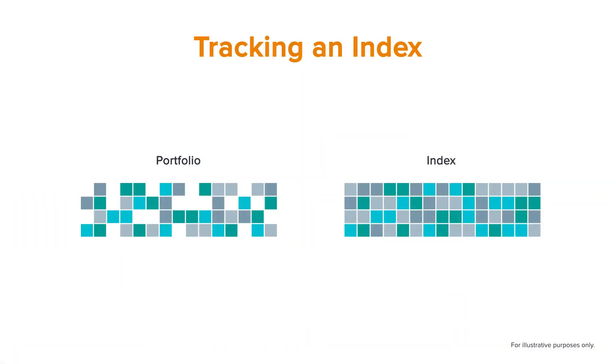It's as simple as making sure that your position weights are similar to the index weights, that your sector weights are similar to the index sector weights, and that your price to earnings, price to book, price to free cash flow, market capitalization, and debt ratios are all similar to those of the index. If you can get those things similar, it's very likely that your 300-stock portfolio will have a performance very similar to the 500-stock index.